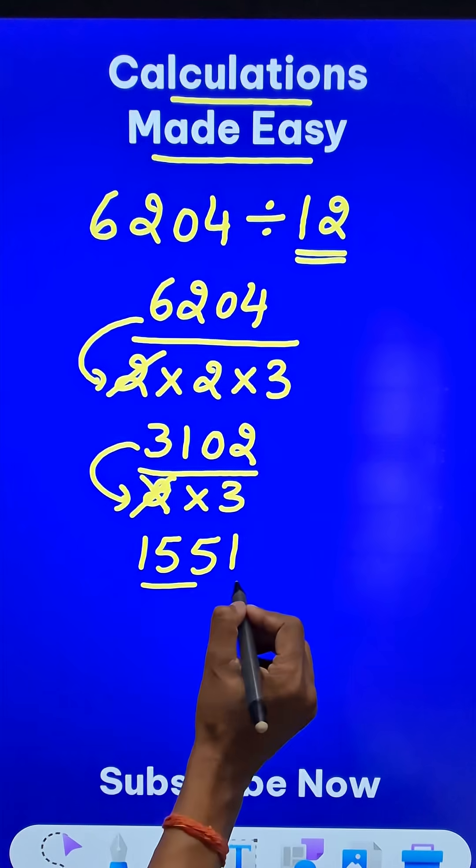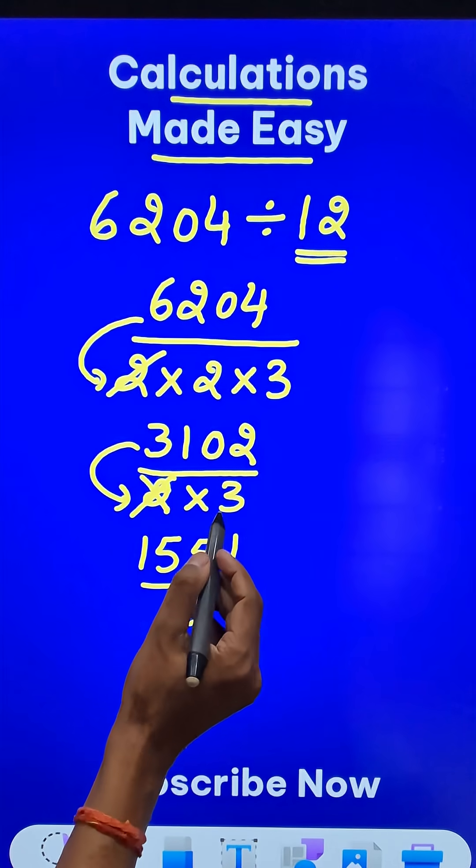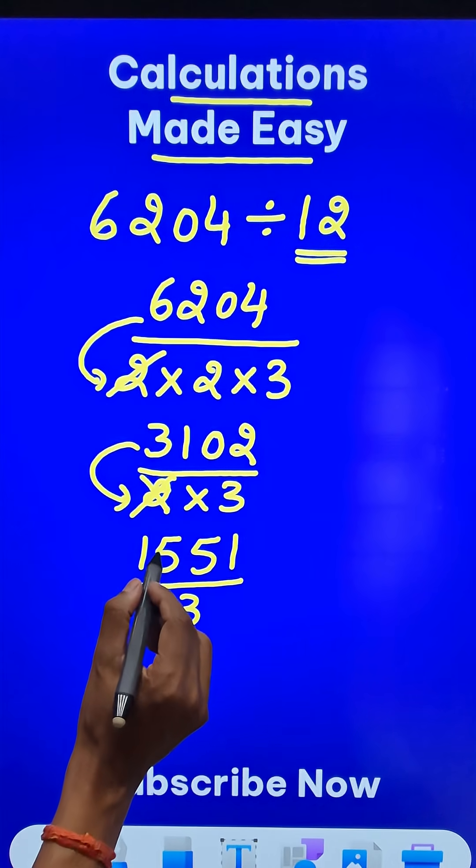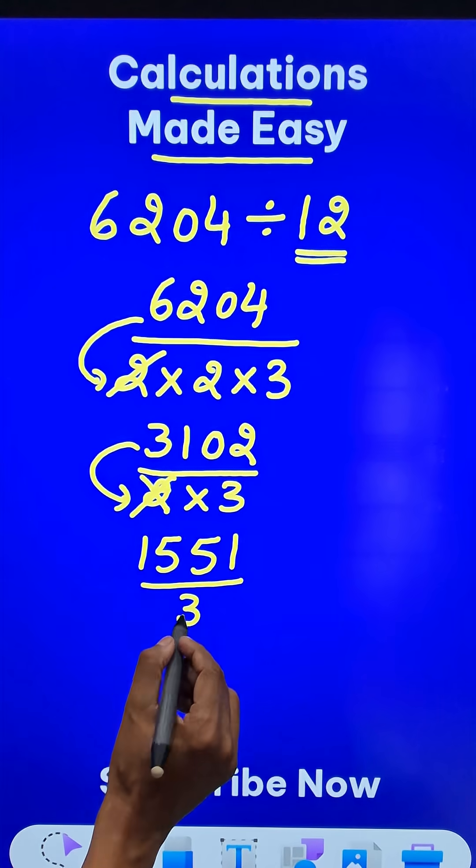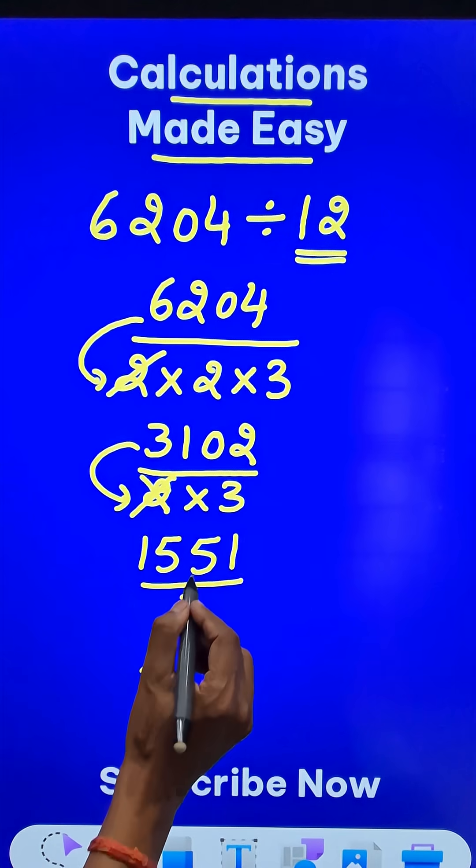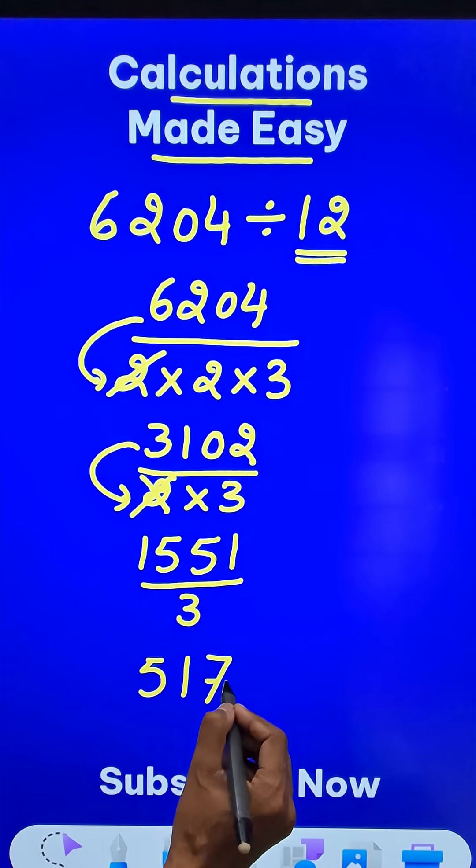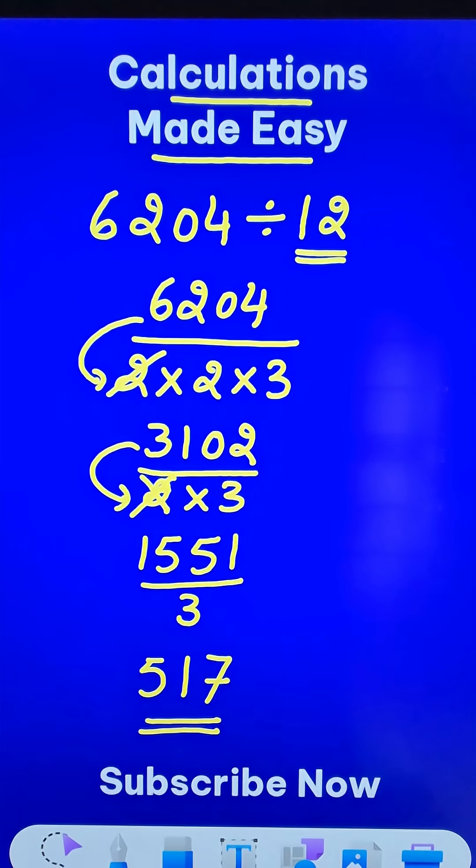And finally we are left with only one factor, that is 3. When you divide 1551 by 3, you get 5, and then 121 means 7. And that is what is the quotient when you divide this.